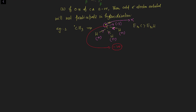So what is the steric number for this methyl free radical? The steric number equals the number of sigma bonds only. The number of sigma bonds is 3 (1 sigma, 2 sigma, 3 sigma). So the hybridization will be sp2, and the structure will be trigonal planar. This is the structure of the methyl free radical — trigonal planar — with one unpaired electron present in an unhybridized p orbital.